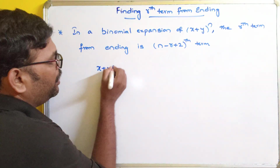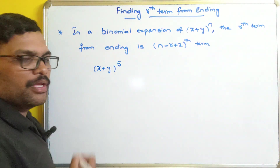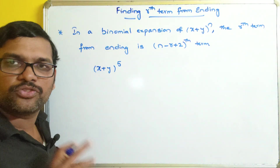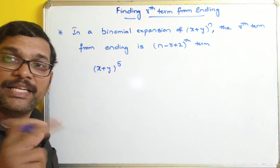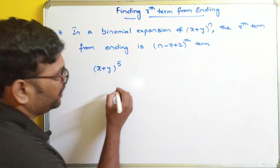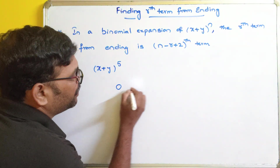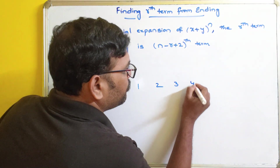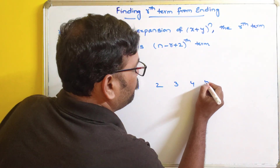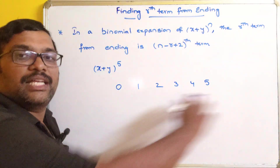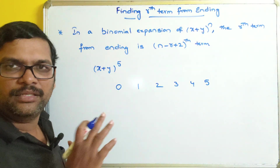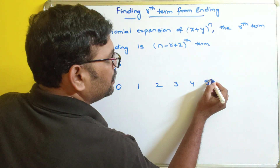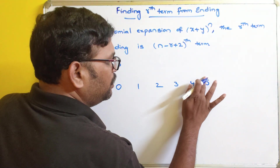For example, take (x + y)^5. In this expansion, how many terms will be there? n is 5, so n + 1 terms — total 6 terms. I am just numbering them 0, 1, 2, 3, 4, and 5. So these are the terms. Let us imagine these are the terms.